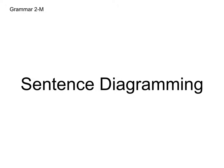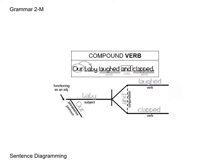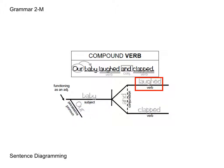Our last concept is sentence diagramming, and we're going to look at compound verbs, also including possessive pronouns, which function as adjectives. We have our subject on the line — in this example, the subject is "baby." The possessive pronoun acts as an adjective for "baby" and is connected diagonally. Then we have the verbs on the other side of the vertical line: "laughed" and "clapped," combined with the conjunction "and."